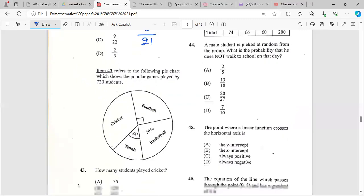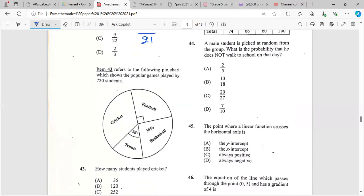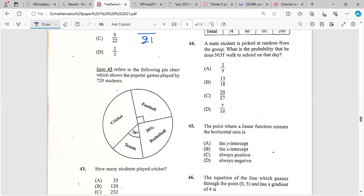Item 43 refers to the following pie chart which shows the popular games played by 720 students. We have cricket, 90 degrees for basketball, 30 percent play football, and 36 degrees for tennis. They want to know how many students played cricket. I'm gonna go the degrees way since I have this area.